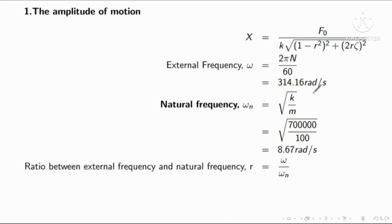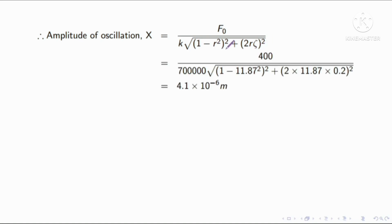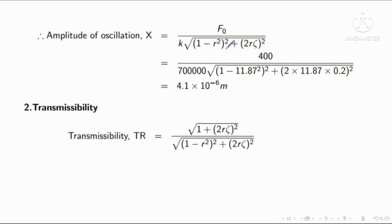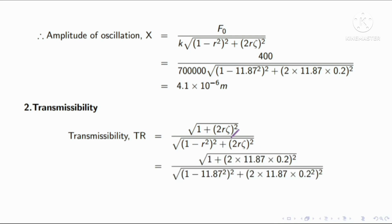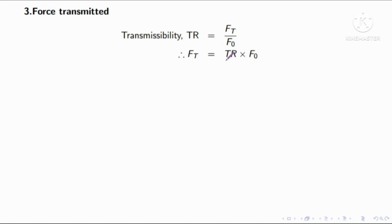So we get omega n equal to 83.67 radian per second. Then the frequency ratio R equals omega by omega n, substituting gives R equal to 11.87. The transmissibility equals root of 1 plus 2r zeta squared, divided by root of 1 minus r squared plus 2r zeta squared. Result is approximately 0.87 Newton.